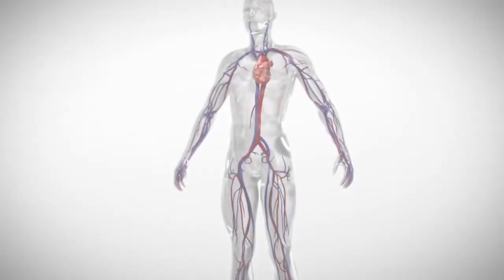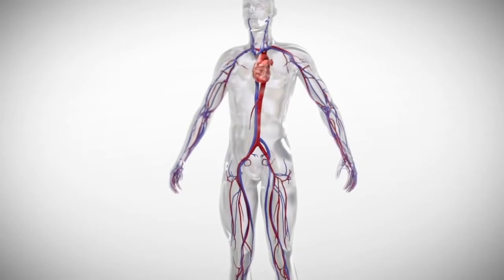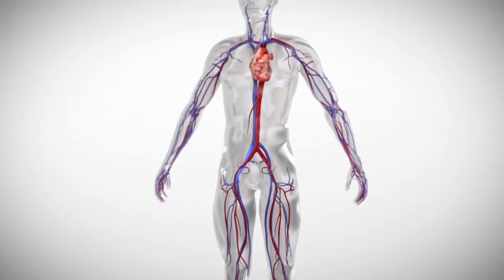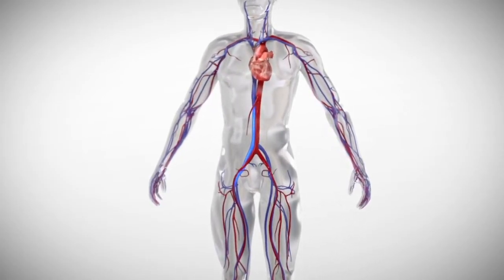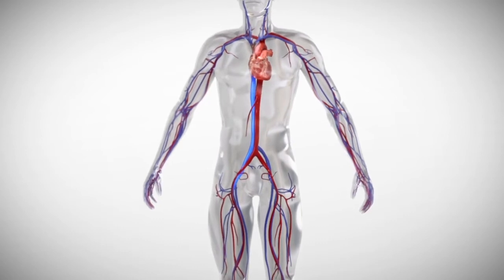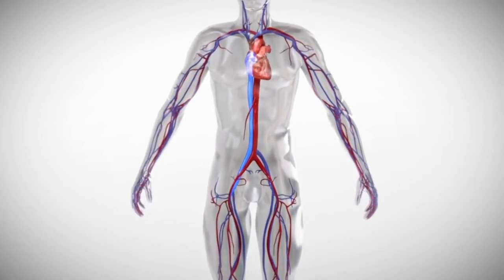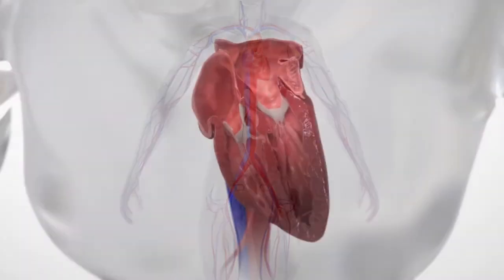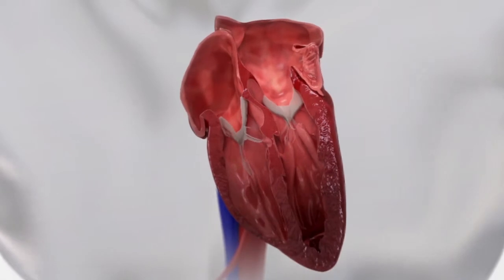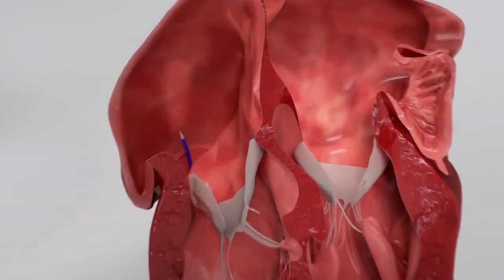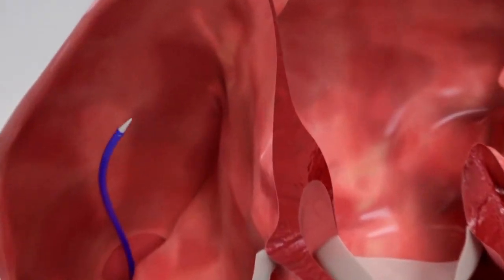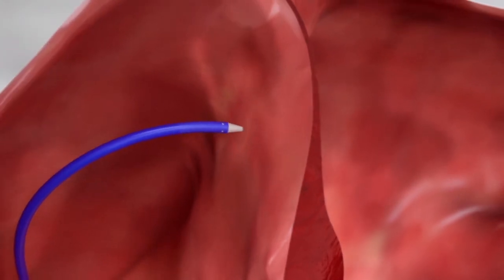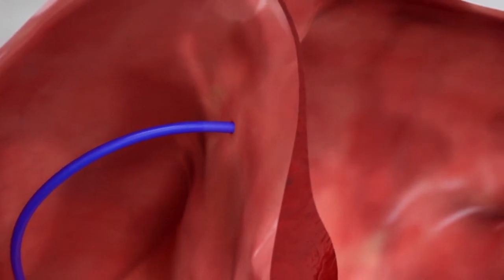The device is placed by an interventional cardiologist using a small tube called a catheter that is inserted into a blood vessel in the groin area and advanced over a guide wire into the heart. The catheter is used to create a very small opening in the heart wall between the left and right atria.